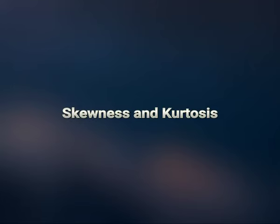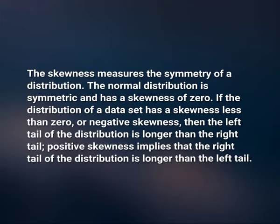Skewness and kurtosis: real life data rarely, if ever, follow a perfect normal distribution. The skewness and kurtosis coefficients measure how different a given distribution is from a normal distribution. The skewness measures the symmetry of the distribution. The normal distribution is symmetric and has a skewness of 0. If the distribution has a skewness less than 0 (negative skewness), then the left tail is longer than the right tail. Positive skewness implies that the right tail of the distribution is longer than the left tail.